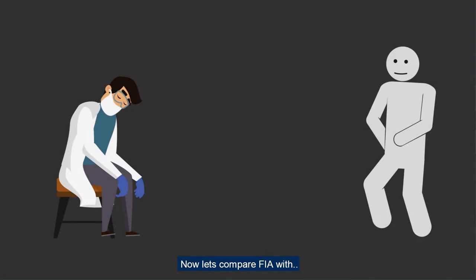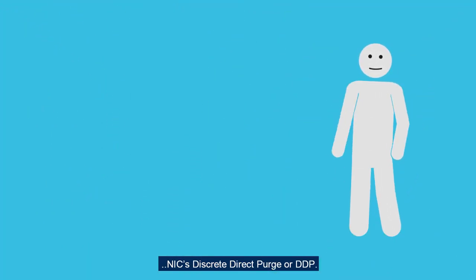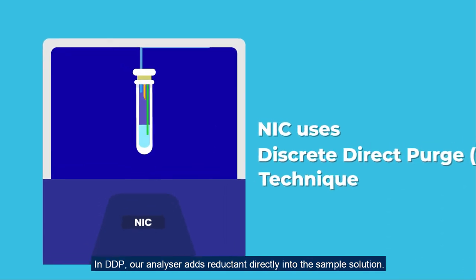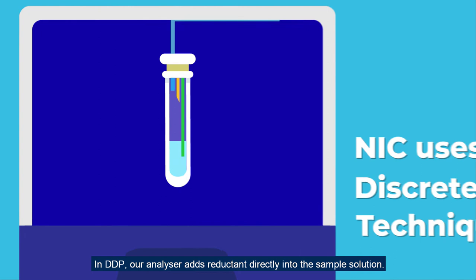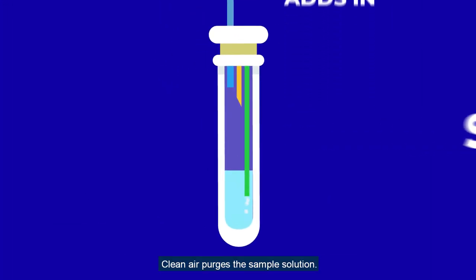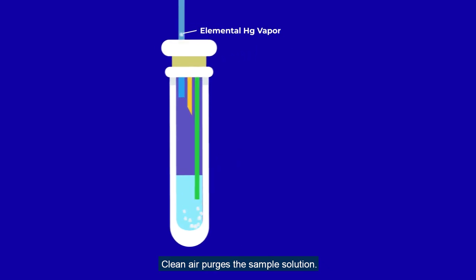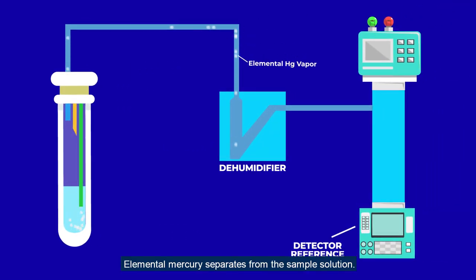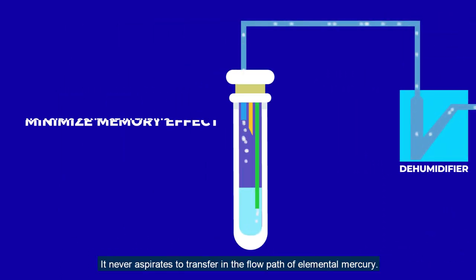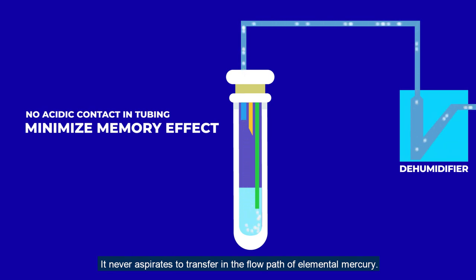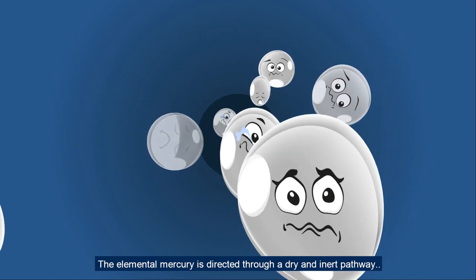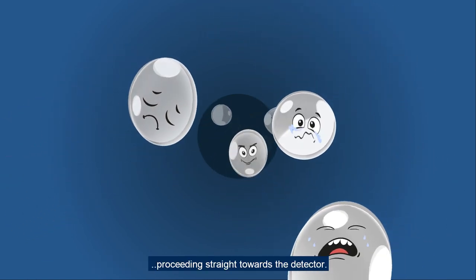Now let's compare FIA with NIC's Discrete Direct Purge, or DDP. In DDP, the analyzer adds reductant directly into the sample solution. Ionic mercury reacts and reduces to elemental mercury. Clean air purges the sample solution, and elemental mercury separates from it — the acidic portion remains behind. It never aspirates to transfer in the flow path of elemental mercury. The elemental mercury is then directed through a dry and inert pathway, proceeding straight towards the detector.